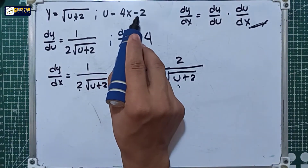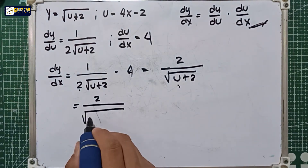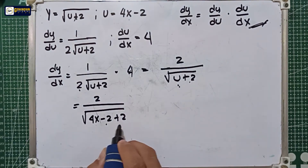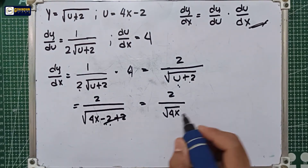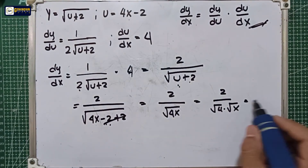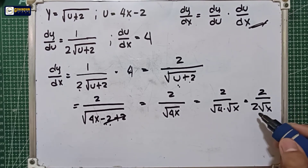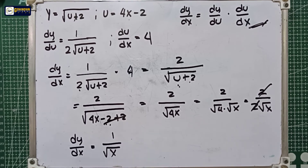The next step is to substitute the value of u, where u is 4x minus 2. That gives us 2 over the square root of 4x minus 2 plus 2. Negative 2 plus 2 equals 0, so we get 2 over the square root of 4x. We can split this as 2 over the square root of 4 times the square root of x, and since the square root of 4 is 2, we cancel the 2 in the numerator and denominator. The final answer is dy over dx equals 1 over the square root of x.